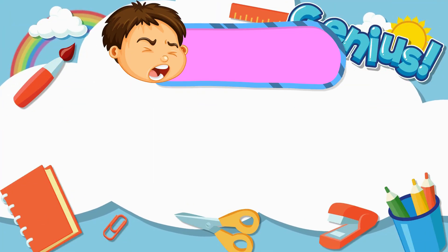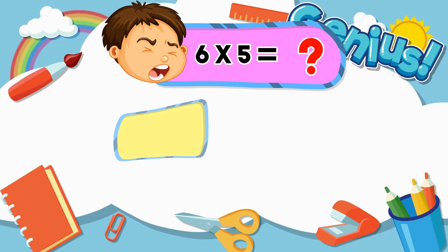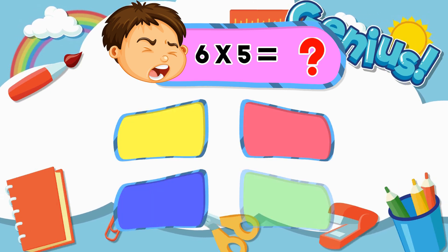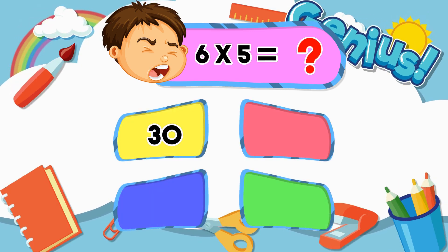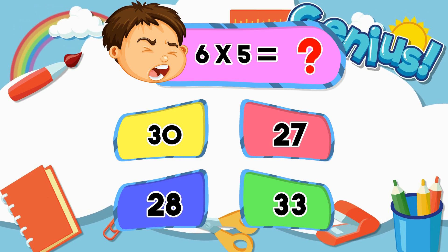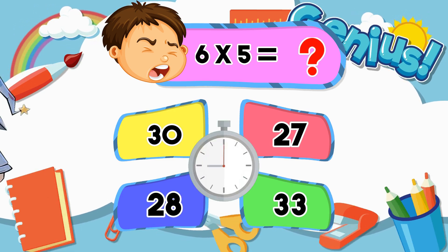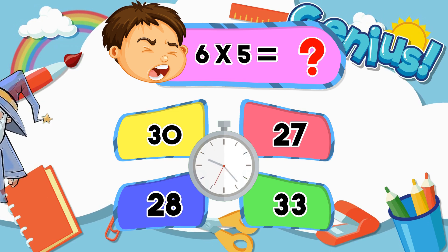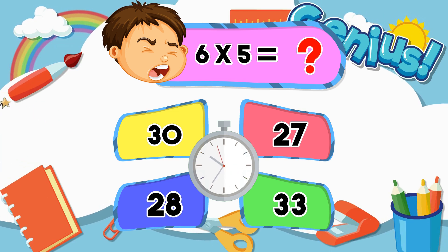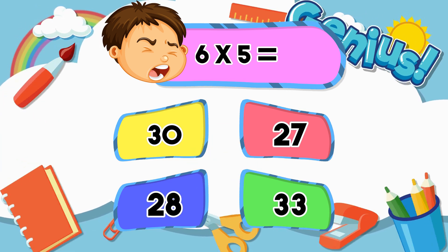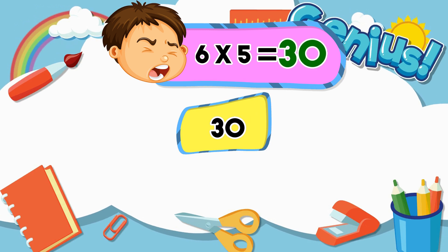What is 6 times 5? 30, 27, 28, 33. Answer: 30.